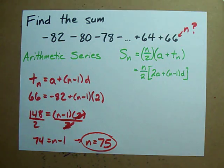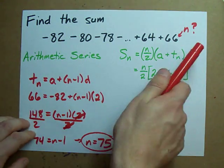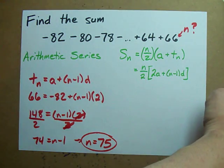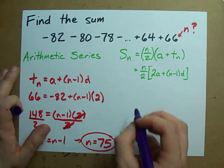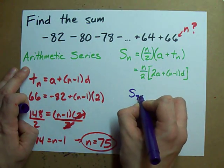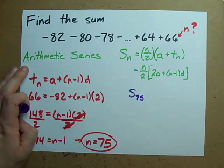So, we're adding up the total of 75 different terms here. But, luckily for us, now we can plug it in. We can find the sum of the first 75 terms.